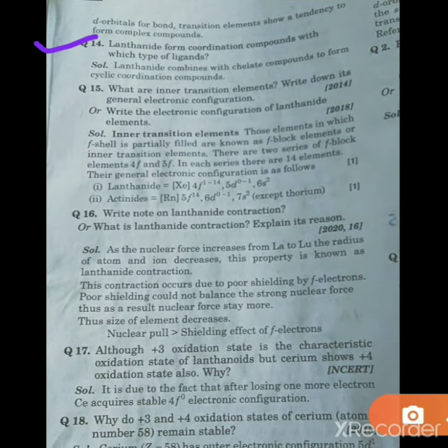Lanthanides form coordination compounds with which type of ligands? So students, whenever lanthanides form coordination compounds, they combine basically with chelate compounds. So basically they are chelating ligands.